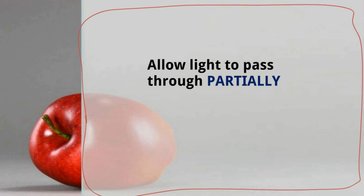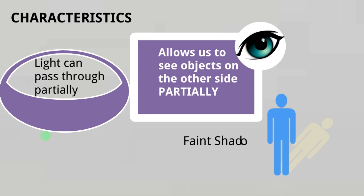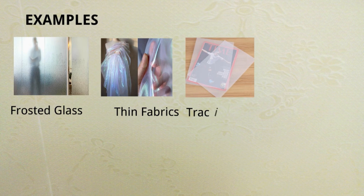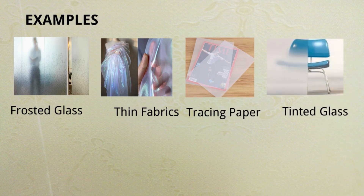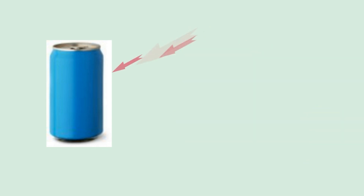Translucent objects — for example, with an apple behind a translucent material, some portion we can see clearly and some portion we cannot see clearly. Light passes through partially, so we are not able to see the object clearly. Characteristics: light can pass through partially, we can see objects on the other side partially, and a faint shadow is formed because light is obstructed partially. Examples: frosted glass, thin fabrics, tracing paper, tinted glass, colored plastics, and clouds.